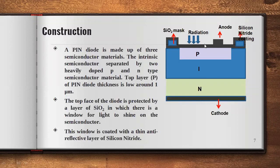With the anti-reflection coating, once radiation falls on the semiconductor material, this radiation will not reflect back. Each photon coming from the radiation, if its energy is more than the energy gap of the semiconductor material, can be absorbed and can create an electron-hole pair.